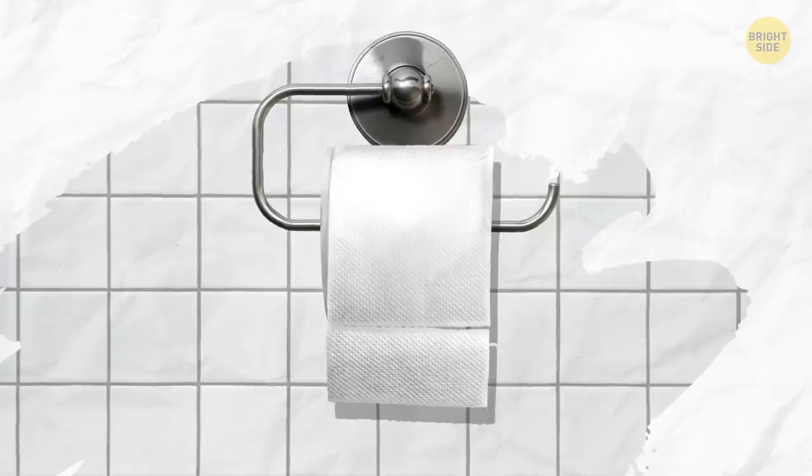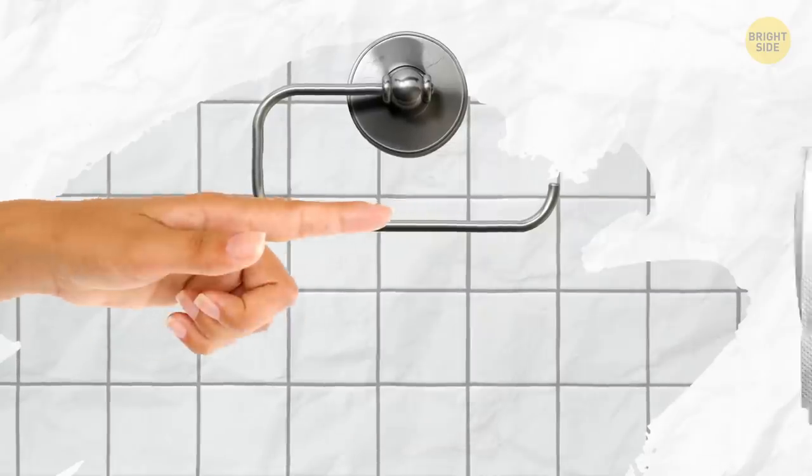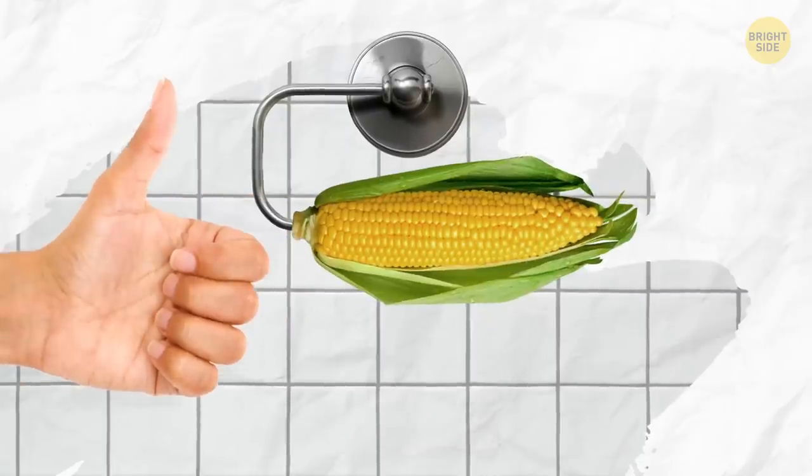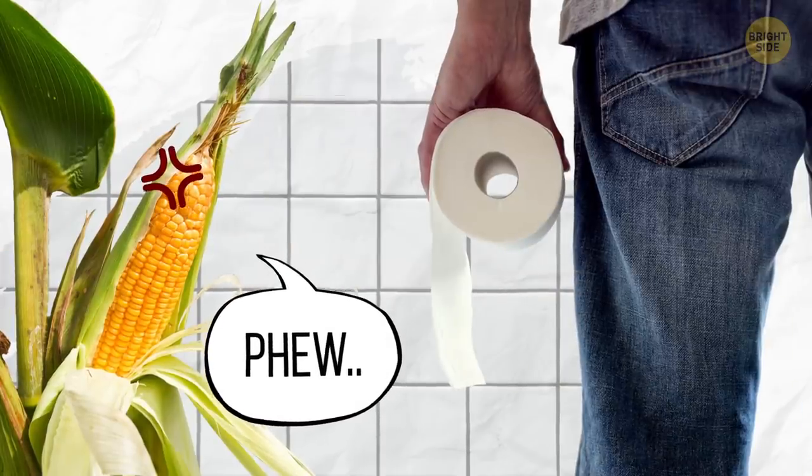People used to use corn cobs instead of toilet paper. Some continue to prefer it even after modern-style commercial toilet paper was invented in 1857. Still, the corn cobs are much happier these days.